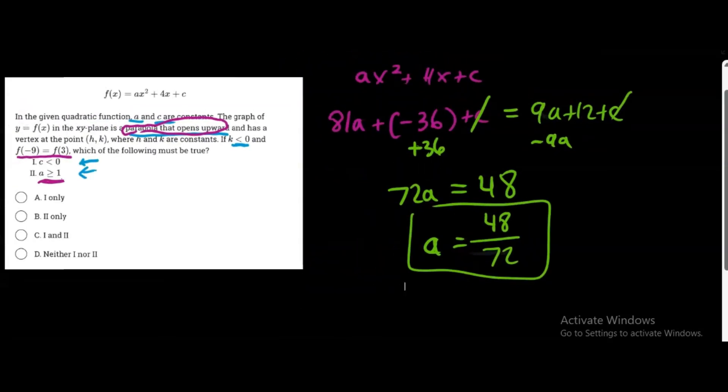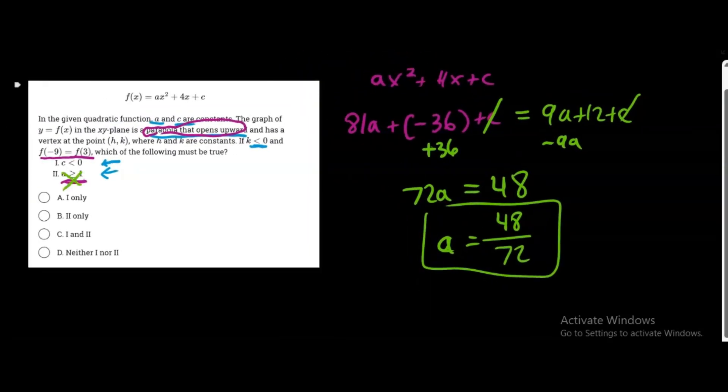So therefore, we can actually eliminate that second clause, because that is not true. a does not have to be equal to or greater than 1. We just proved here that the a value is a decimal value. It's positive. It's under 1, but it's still positive.